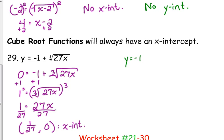So for the y-intercept, you plug in 0 for x. It does not matter what type of function, it works the same. Well, 27 times 0 is 0, the cube root of 0 is 0, so your y-intercept is negative 1. So we've got the point (0, -1) as the y-intercept.